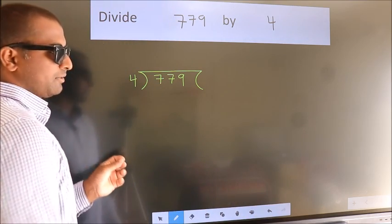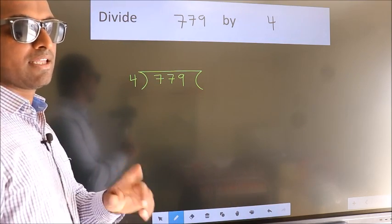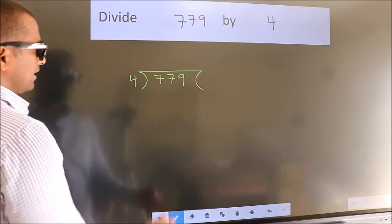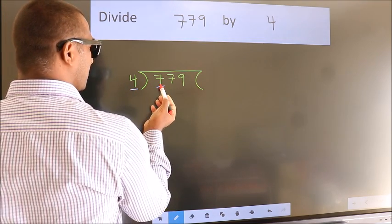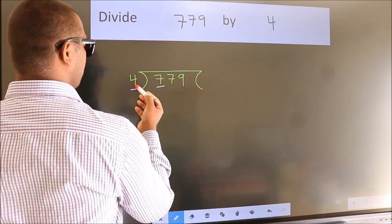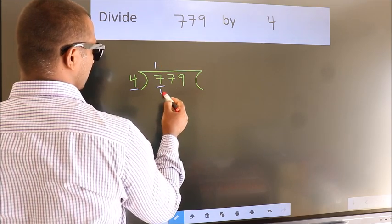This is your step 1. Next, here we have 7. A number close to 7 in the 4 table is 4 once 4.